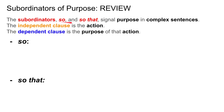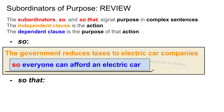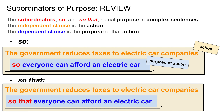Now let's talk about subordinators of purpose. The subordinators 'so' and 'so that' signal a purpose in complex sentences. The independent clause is the action, and the dependent clause is the purpose of that action. For example: 'The government reduces taxes to electric car companies' — that's the action. 'So everyone can afford an electric car' — that's the purpose. We can also use 'so that': 'The government reduces taxes to electric car companies so that everyone can afford an electric car.' The independent clause is the action, and 'so that everyone can afford an electric car' is the purpose.